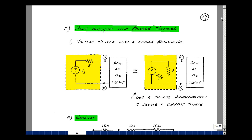There are two cases to consider. The first is a voltage source with a series resistance. Back in Chapter 2, we showed that a voltage source with a series resistance could be converted into a current source with a parallel resistance that produces the same effects at nodes A and B. These components are not the same, but they produce the same effect. So if we have a circuit with voltage sources that have series resistances, we can convert them to current sources with parallel resistances and then use our nodal analysis inspection algorithm.